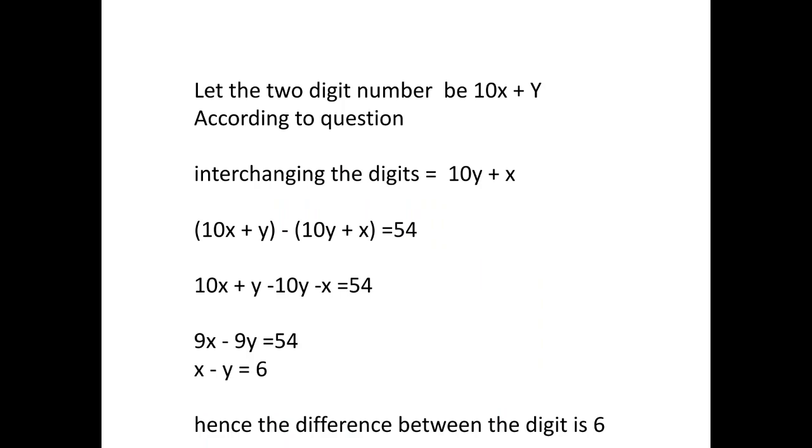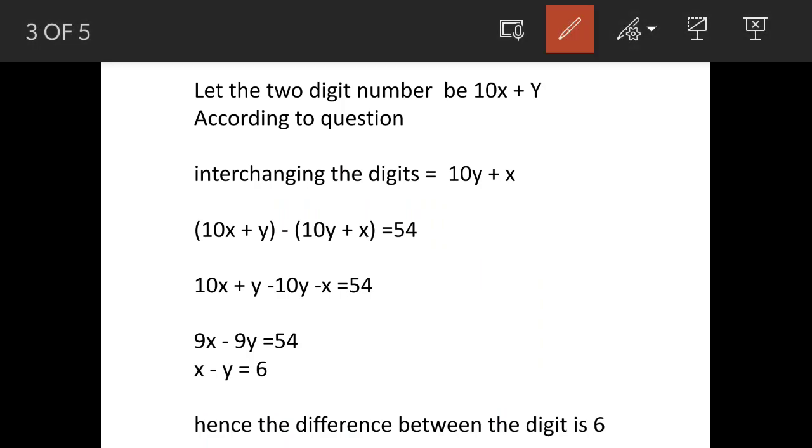In all these questions where it is given two digits, we have to assume a number, and that number will be 10x plus y. Why 10x plus y? Why not 12x plus y or something else? Suppose that number is 39. Then it's 10 times 3 plus 9. This is how we factorize 39.